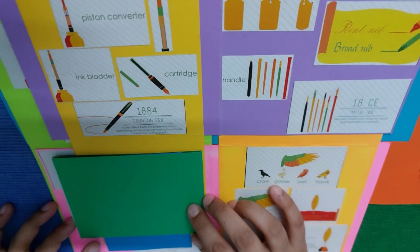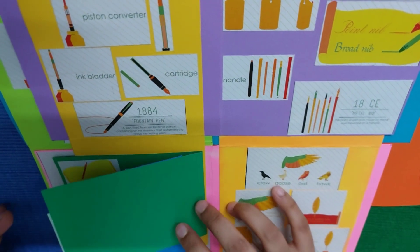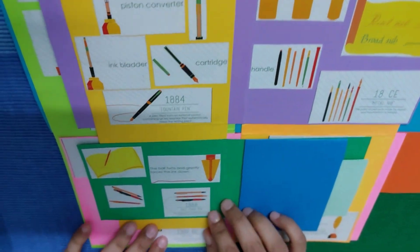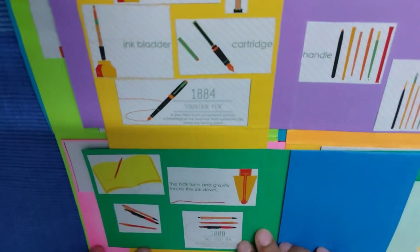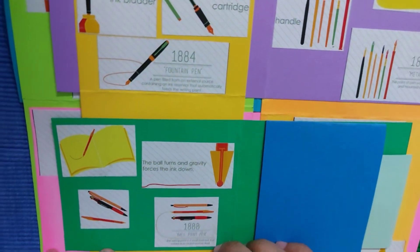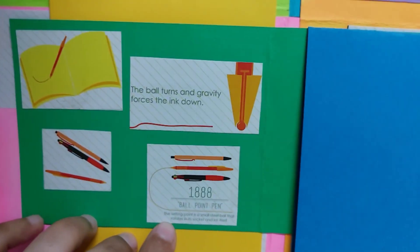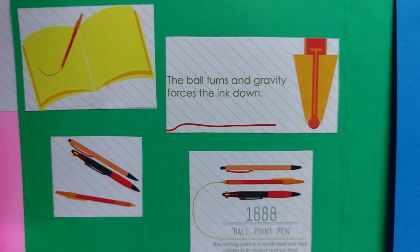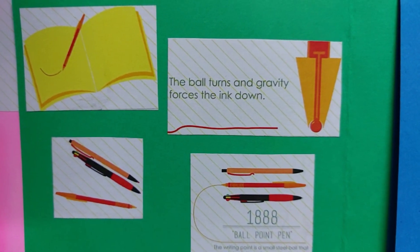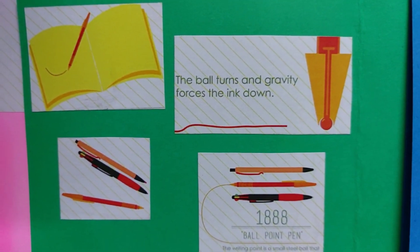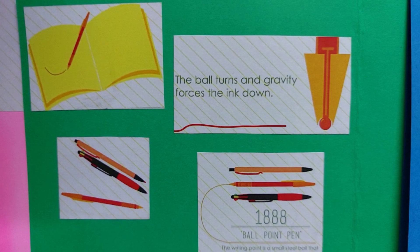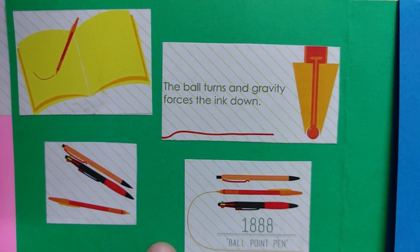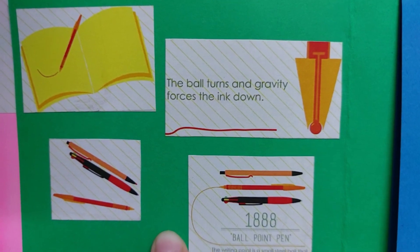After the fountain pen, the ballpoint pen came in 1888. The writing point is a small steel ball that rotates in its socket and feeds ink itself. You know the ballpoint very easily because you are using it nowadays.